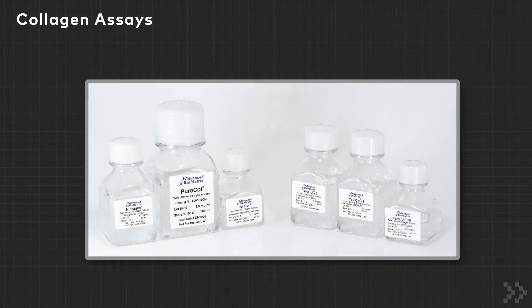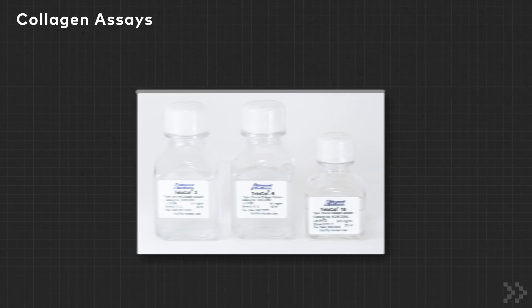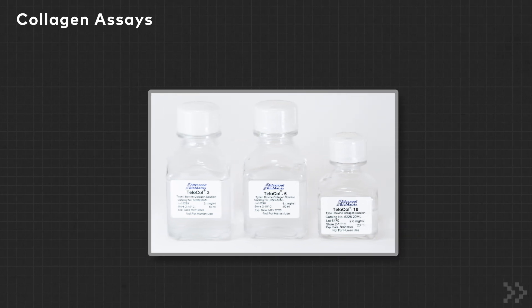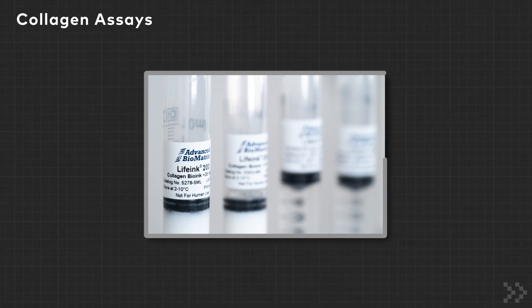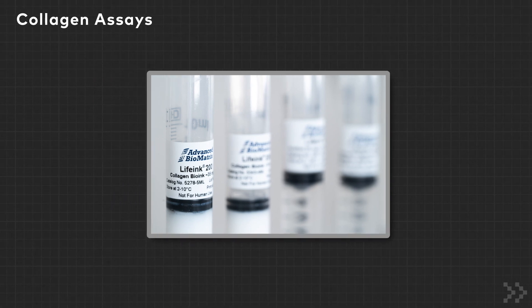Other ABM collagen products may be considered if different mechanical properties of collagen are desired. For example, you can use stiffer hydrogels to evaluate changes in cell migration related to the matrix stiffness. Additional ABM products include collagen type 2 through type 4 and LifeInk BioInk, the world's first commercially available collagen bioink for extrusion-based bioprinting.